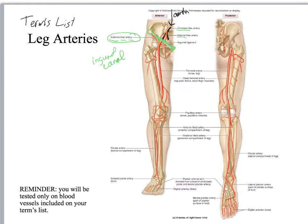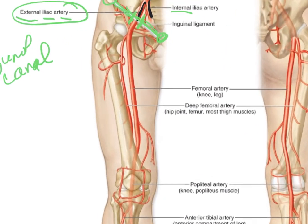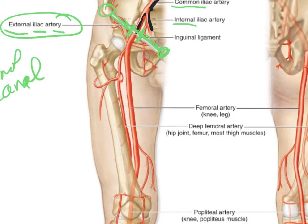When the common iliac goes through that inguinal canal, you change the name and now you have the femoral artery. Off of the femoral artery we have the deep femoral, which is obviously going to be deep, and you can also see your lateral and medial circumflex femoral arteries wrapping around the femoral neck.